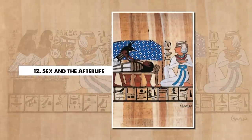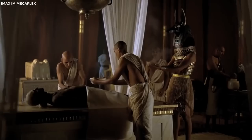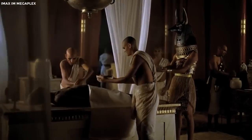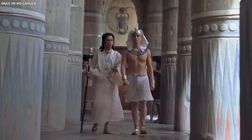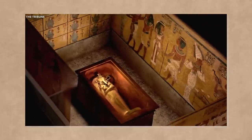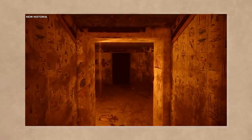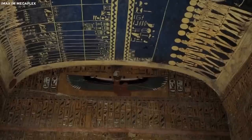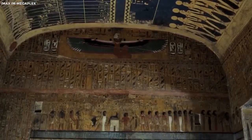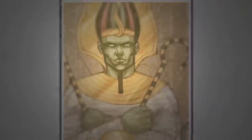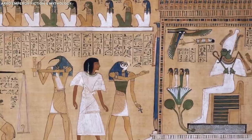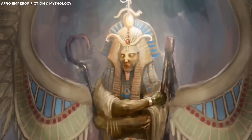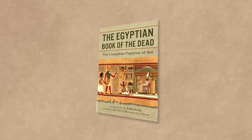12. Sex and the Afterlife. The afterlife held a prominent place in ancient Egyptian belief. They viewed it as an extension of earthly life, where people would continue their daily activities, including sex. One evidence of this belief is found in the erotic imagery decorating the walls of tombs, believed to ensure the dead's sexual potency in the afterlife. Tomb inscriptions and prayers often invoked fertility gods and goddesses, asking for sexual virility. Osiris, the god of the afterlife and resurrection, was also the god of fertility, and was regularly depicted with an erect phallus, symbolizing his power to bring life and renewal.